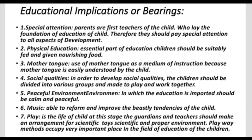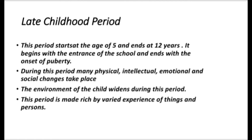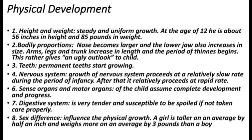Let's begin the second stage of development — the late childhood period. Late childhood is an intervening period between childhood and adolescence, starting at age 5 and ending at age 12. It begins with the entrance to school and ends with the onset of puberty. During this period, many physical, intellectual, emotional, and social changes take place, and the environment of the child widens. This period is made rich by varied experiences.